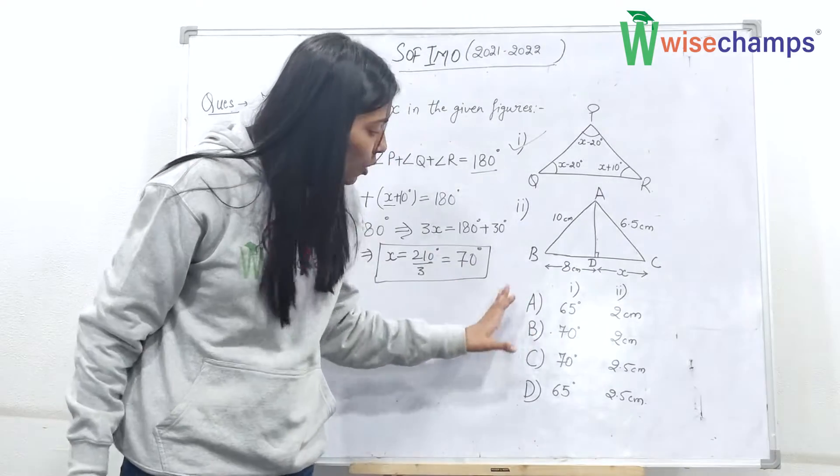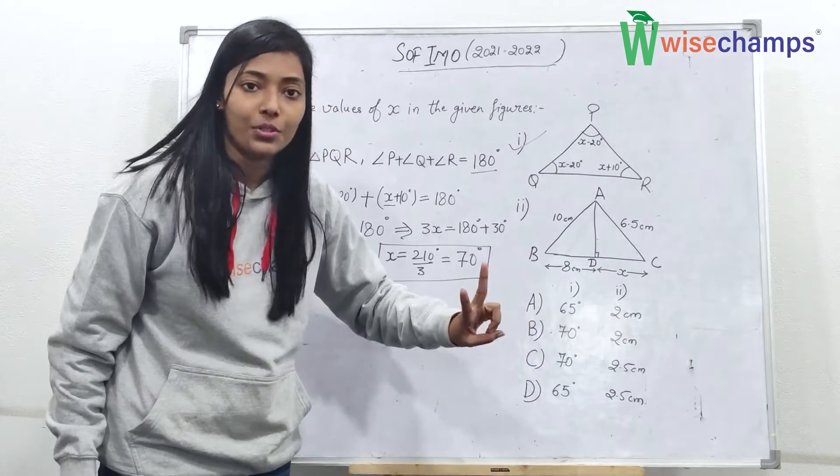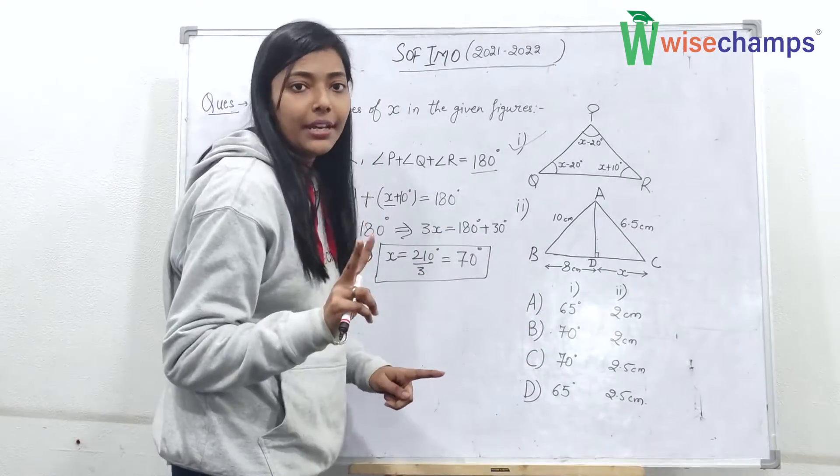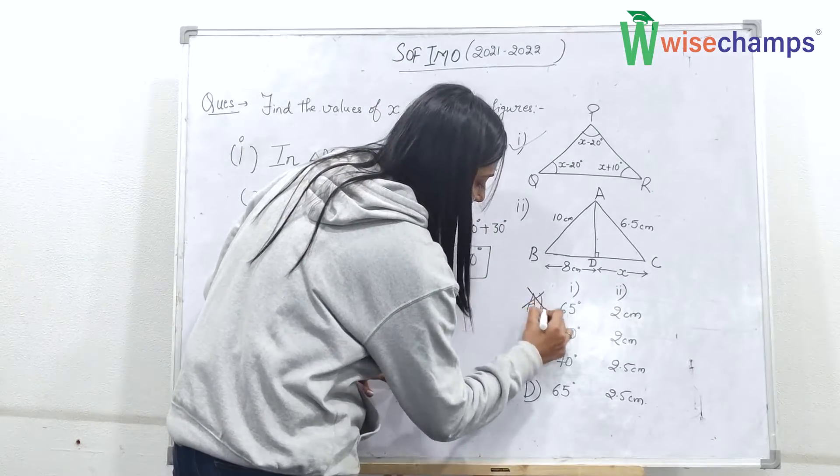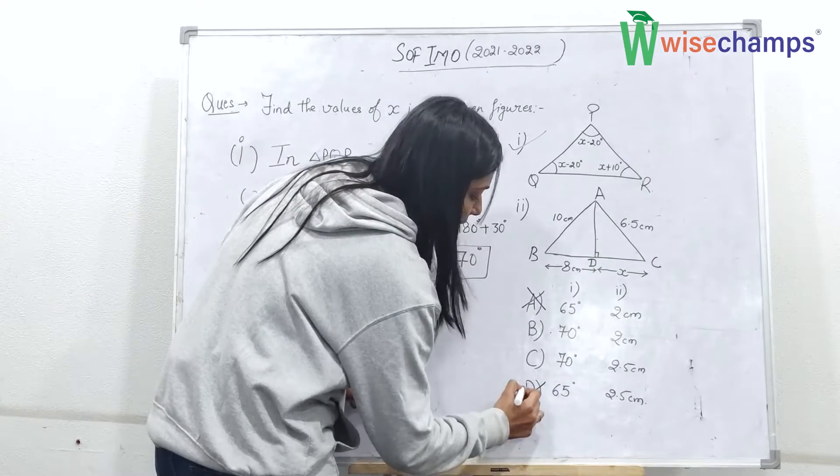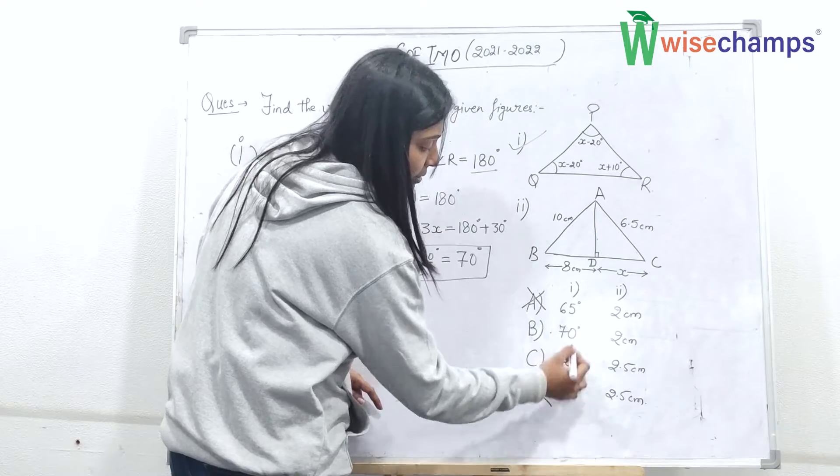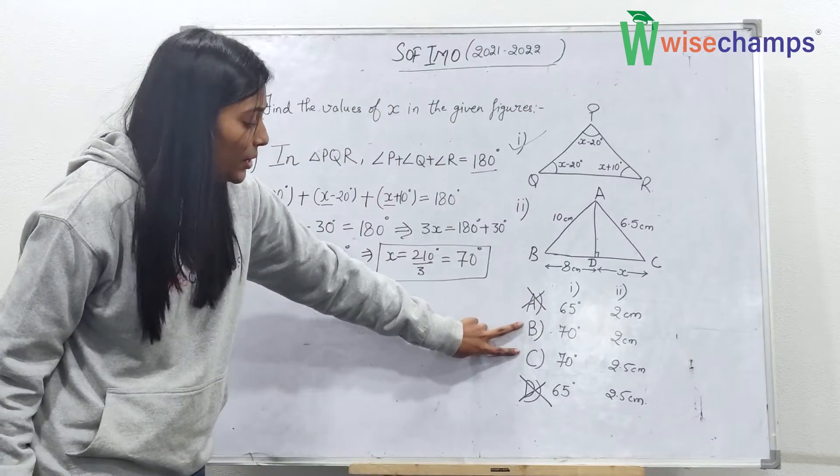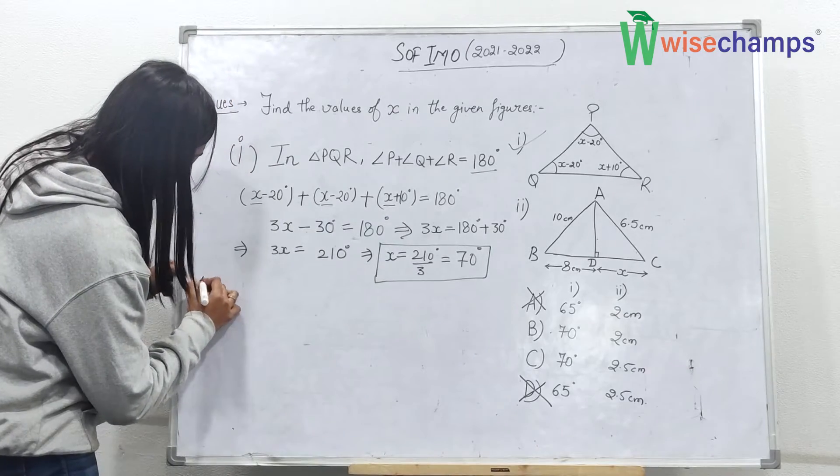So now if you go to the options, here 70 degrees is in 2 options. So you can directly eliminate 2 incorrect options from the first part. Like A cannot be the answer and D cannot be the correct option, because here the value of the first figure is different. So now you need to check between these two options. So let's go to the second triangle.